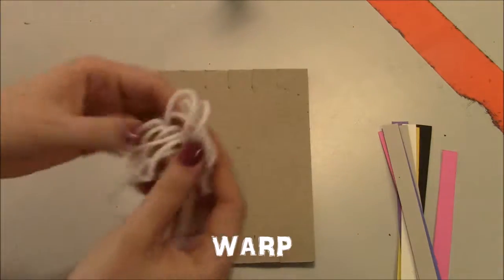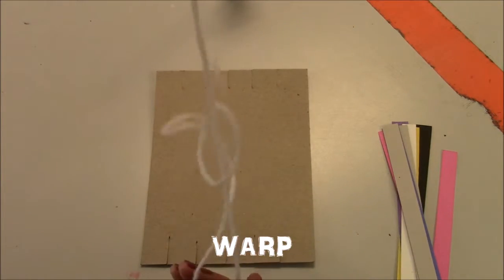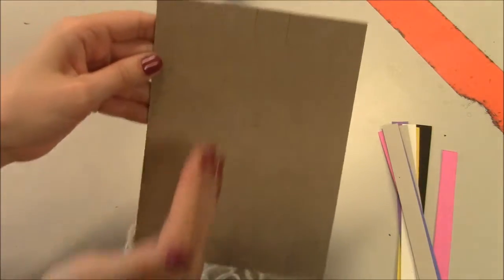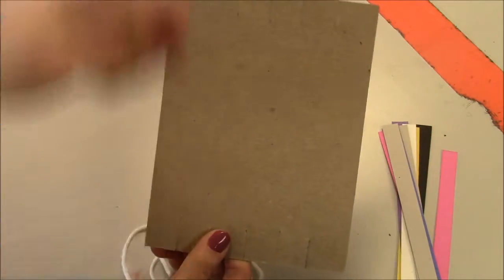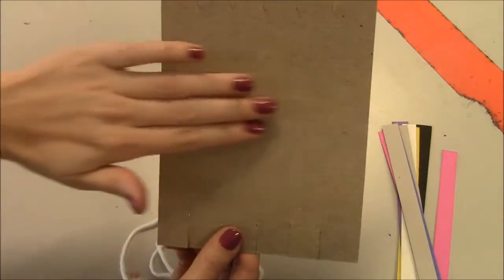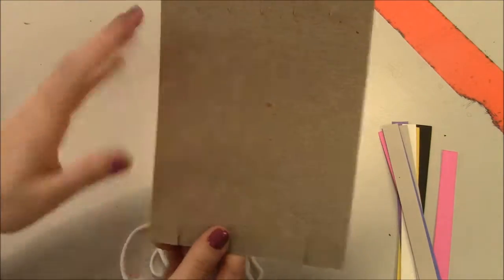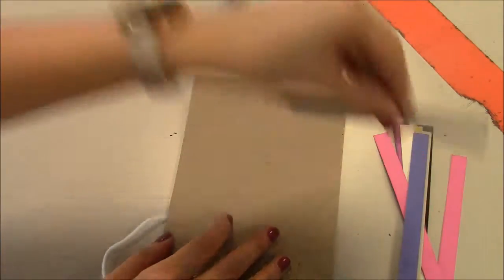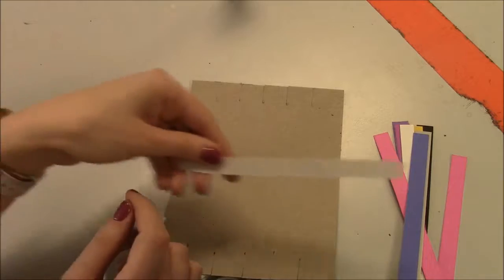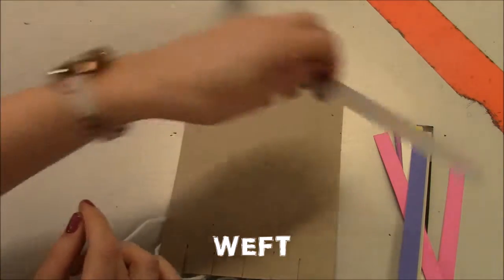If you remember, our warp is the piece of string that is vertical on our loom. So this warp is going to wrap around our loom and it's going to be nice and tight because it's going to hold our paper pieces onto our loom. Now the paper pieces, they go right to left, they're called the weft.